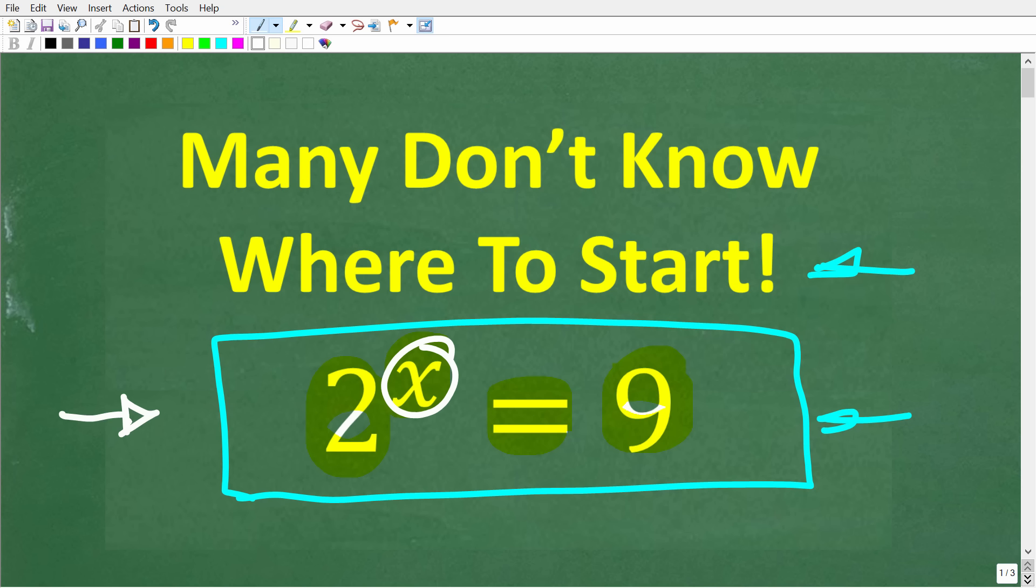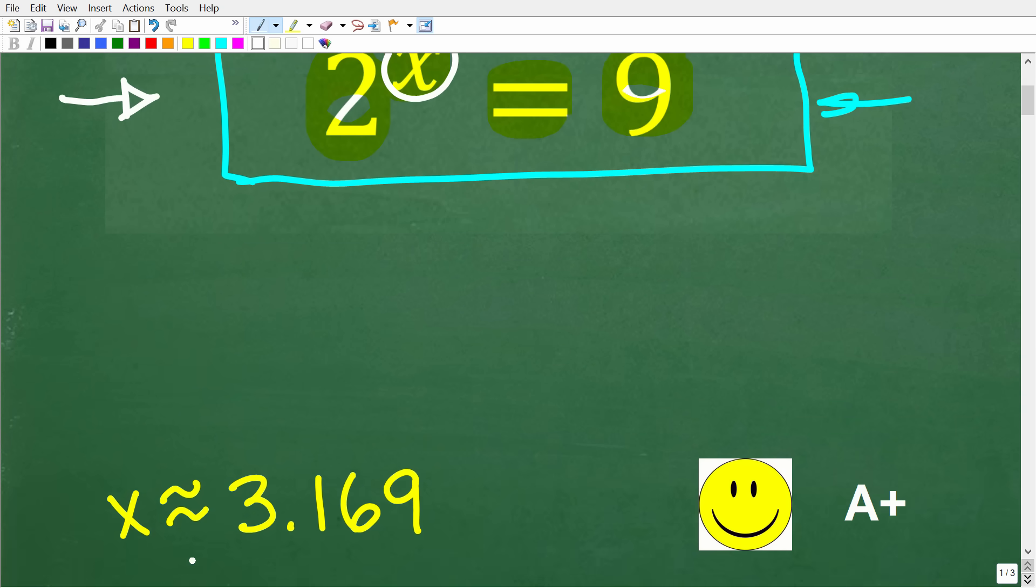Then, of course, I'm going to solve this problem step by step. All right, so 2 to the x power is equal to 9. What is x equal to? Well, the correct solution is x is approximately equal to 3.169.